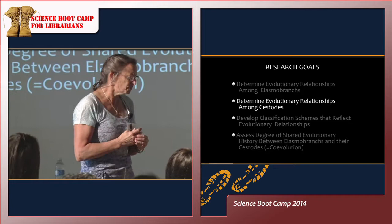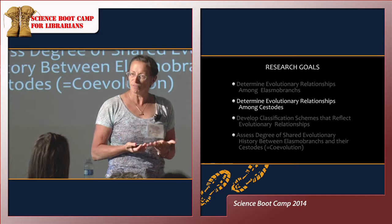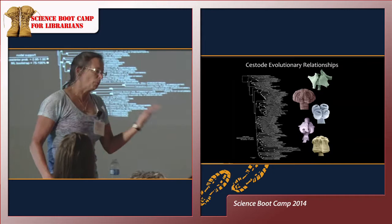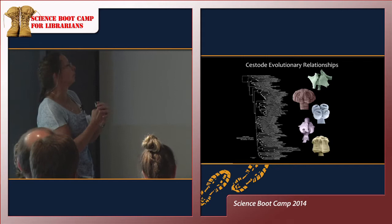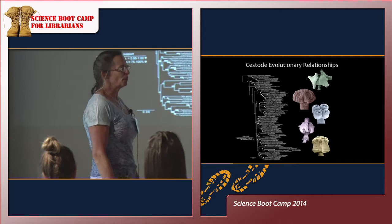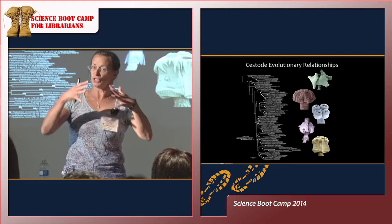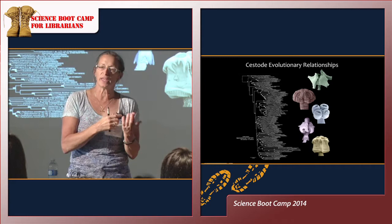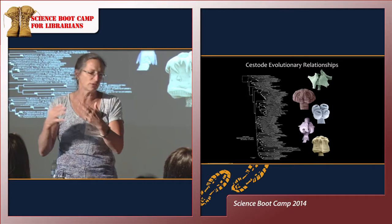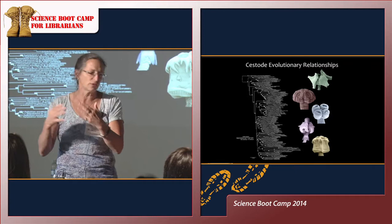I want to spend more time talking about the evolutionary relationships among the cestodes. We also recently published the most comprehensive phylogeny of elasmobranch tapeworm relationships. I want to talk about some of the things that came from that tree. You have to trust me that we think the evolutionary relationships are robust — we'll continue to add genes and other taxa to try to verify this — but right now it looks fairly stable as we add additional species.